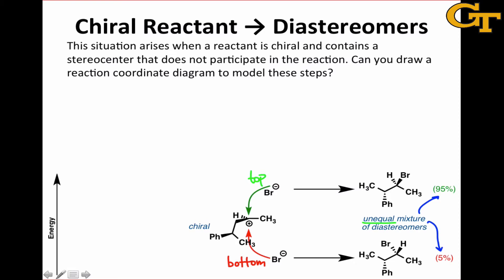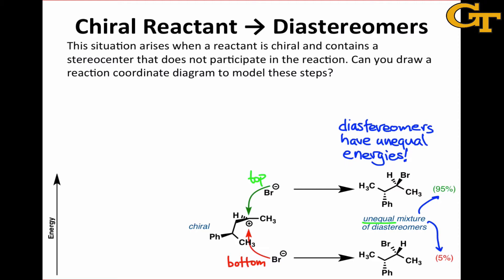We can understand this by recognizing that, unlike enantiomers, diastereomers have unequal energies. This is because the internal distances between the atoms in diastereomers are not the same — so even from a simple basis like Coulomb's law, we expect the energies of the two possible products to be different. The product arising from top face attack is the lowest energy product because it forms in greatest yield, so we draw that one fairly low, and the product from bottom face attack a bit higher in energy. The origin of this energy difference has nothing to do with connectivity or reactivity — merely recognizing that the two products are diastereomers is enough to conclude that they have different energies.